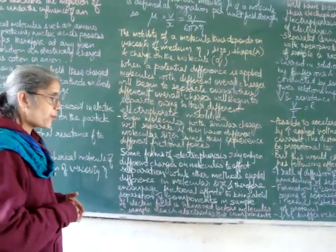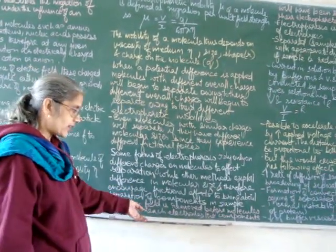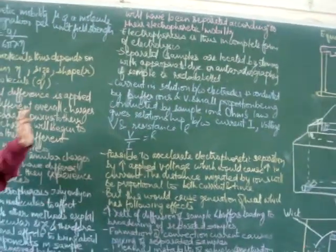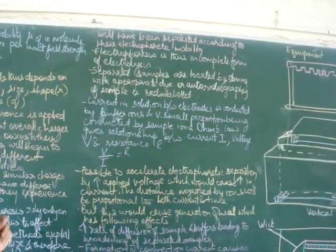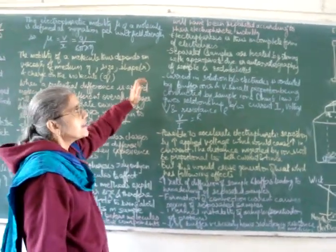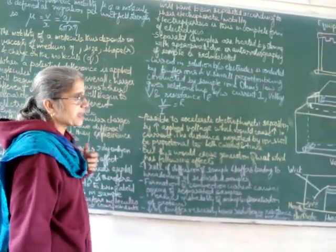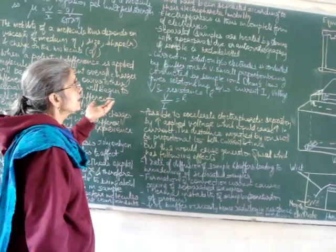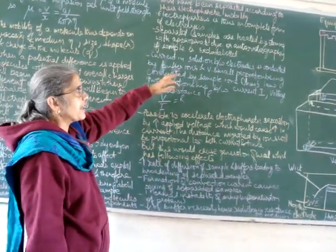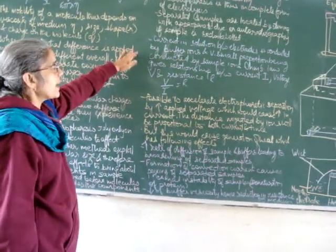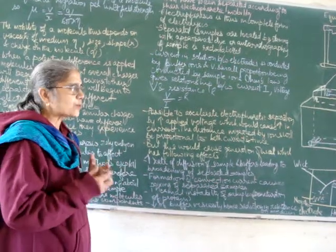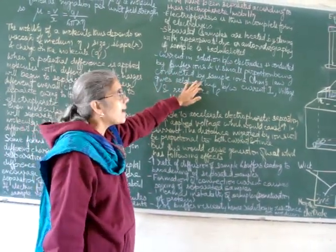If the electric field is removed before the components of the sample reach the electrodes, the components will have been separated according to their electrophoretic mobility. Electrophoresis is an incomplete form of electrolysis. Separated samples can be located by staining with a suitable dye, or if the samples are radiolabeled, by autoradiography. Current in solution between electrodes is conducted by buffer ions, and only a very small amount is conducted by sample ions.